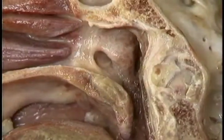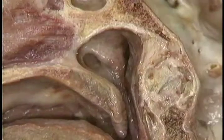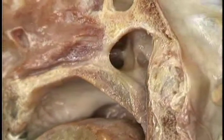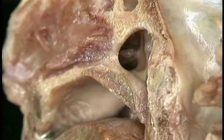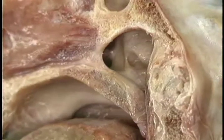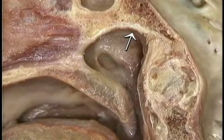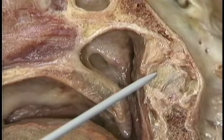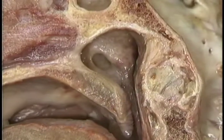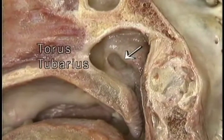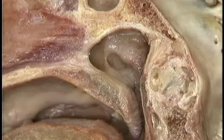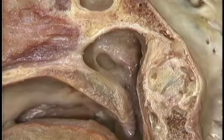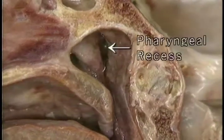Now we'll move back and look at the nasopharynx. The openings from the two nasal cavities into the nasopharynx are called the choanae or posterior nares. The roof of the nasopharynx lies underneath the basilar part of the occipital bone, and the back of the nasopharynx lies in front of the atlas vertebra. In the mucosa of the lateral wall is a pronounced inward fold called the torus tubarius, produced by the inward projection of the cartilage of the auditory tube. Behind the torus tubarius is a deep recess, the pharyngeal recess.